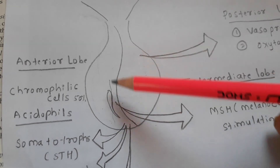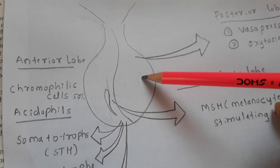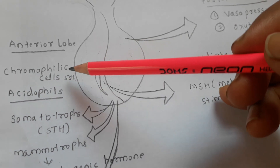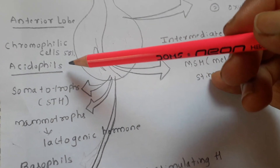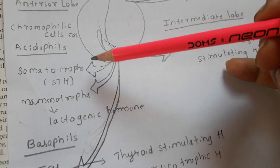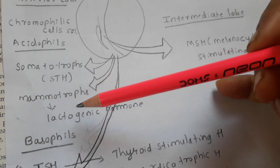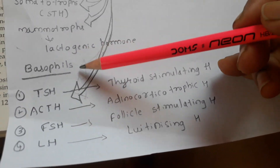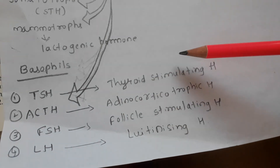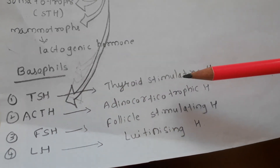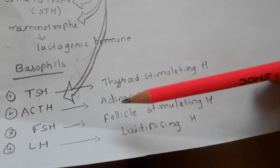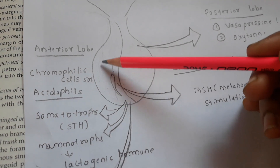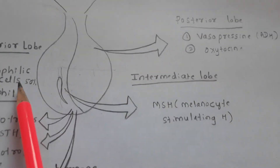Regarding hormone secretion: the anterior lobe contains chromophilic cells (about 50%). These consist of acidophils, which secrete somatotropes — the somatotropic hormone (STH) — and mammotropes, which secrete lactogenic hormone. The anterior lobe also contains basophils, which release very important hormones: TSH (thyroid stimulating hormone), ACTH (adrenocorticotropic hormone), FSH (follicle stimulating hormone), and LH (luteinizing hormone). These are the hormones secreted only by the anterior lobe of the pituitary gland.